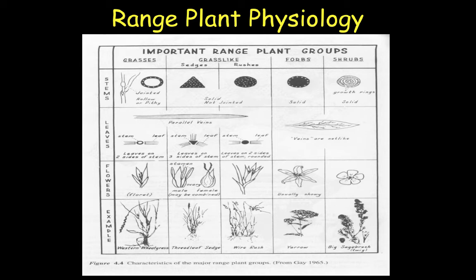So over the past four weeks, we've spent quite a bit of time talking about rangeland plants. A couple of weeks ago in class, I think it was the end of February, first part of March, we really started talking about the morphology of plants — the different parts of the anatomical structure, as well as what the stems look like, the leaves, flowers, for all of the different plant groups that can be found on rangeland.